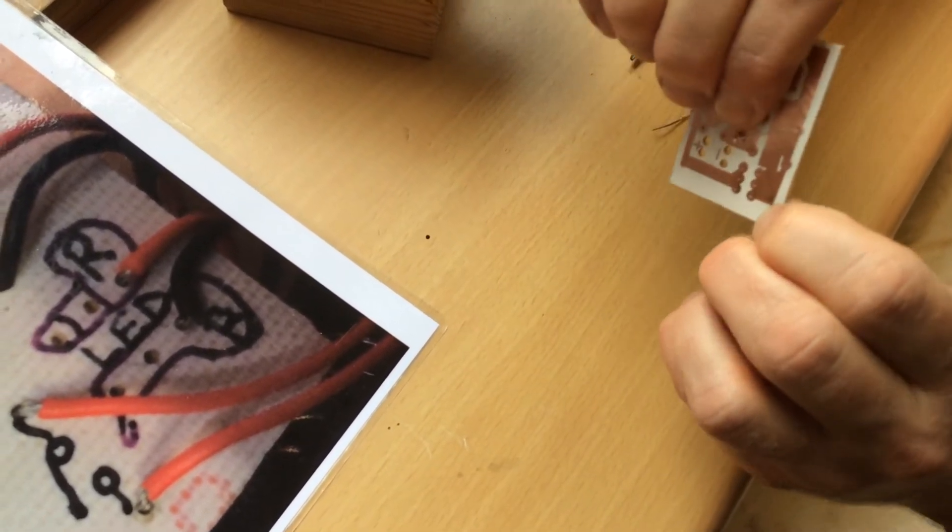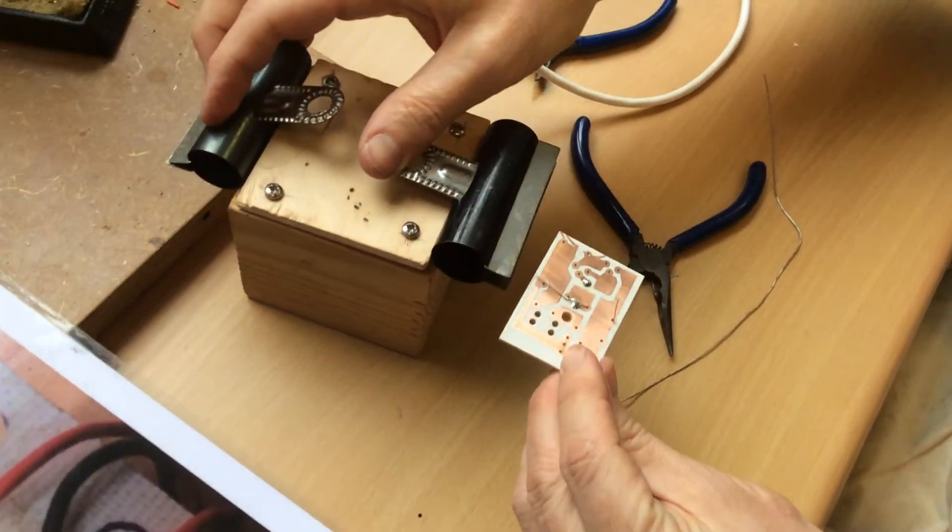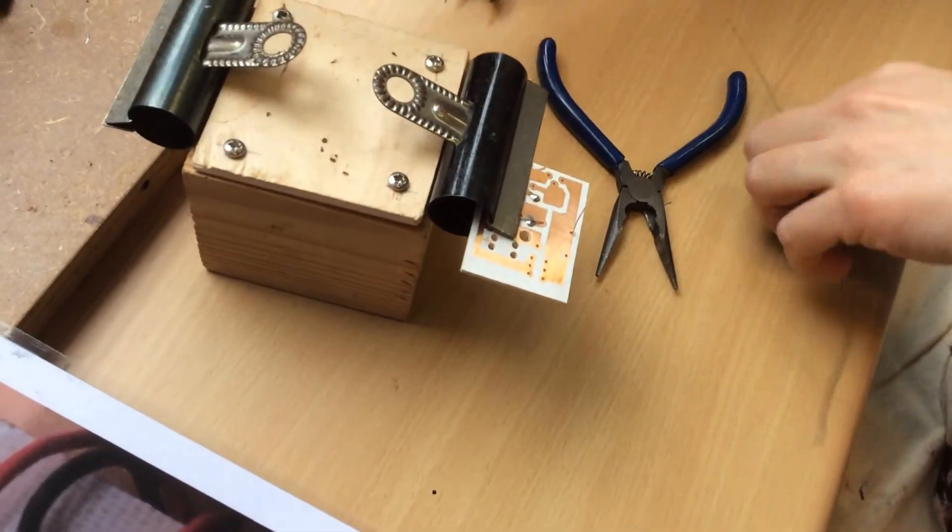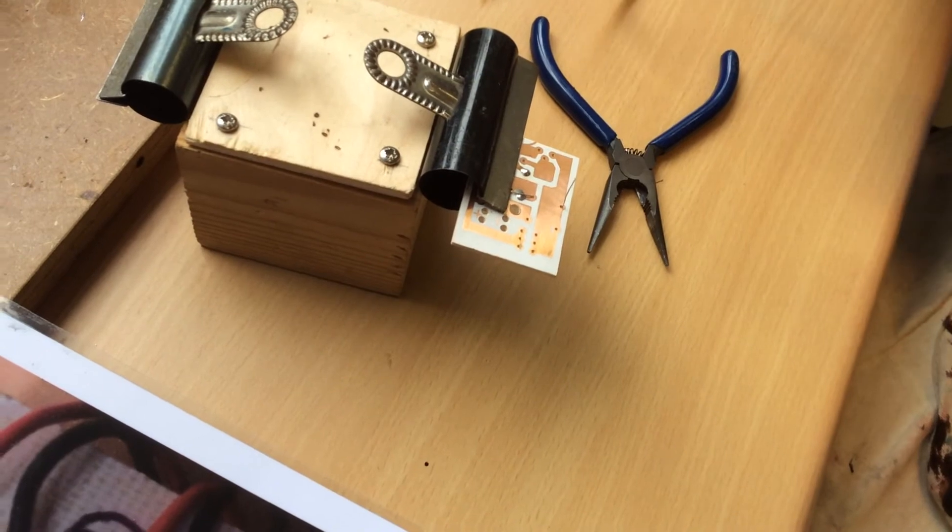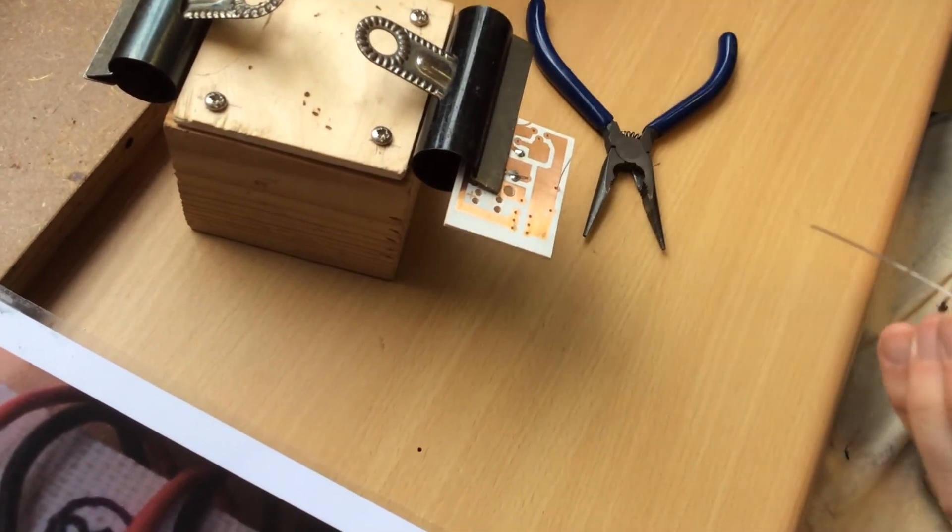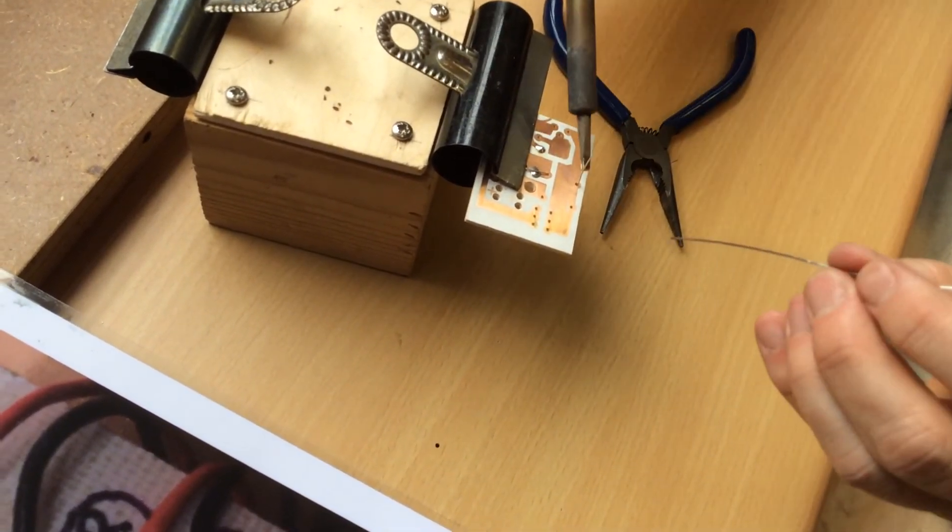Bend over one. Clamp it in there. And solder the sticky up one. So solder on one side. Solder on the other.